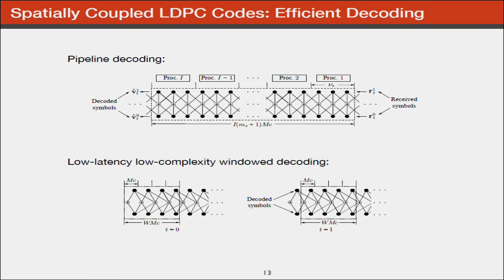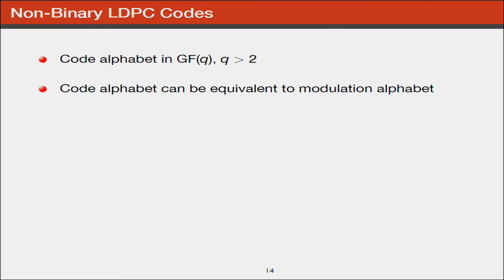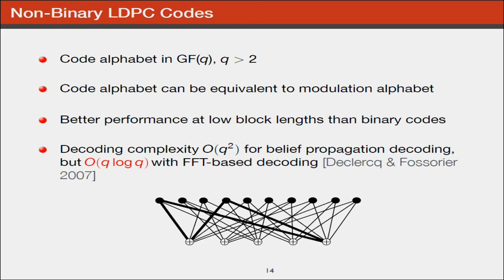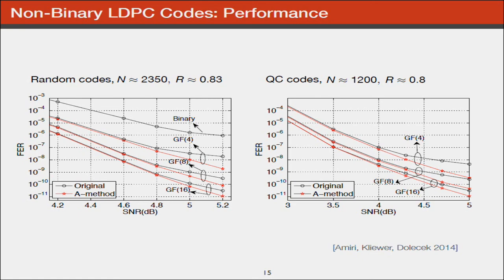There are other codes, for example non-binary LDPC codes. They work in GF(q), and the code alphabet can be equivalent to the modulation alphabet. If we have 16-QAM, we can have a code which works in this field and directly encode the modulation symbols. Performance is better at low block length than binary codes. Decoding complexity is order q log q, so it's still not too big. In this graph, we pass messages related to symbols over a finite field rather than bits.